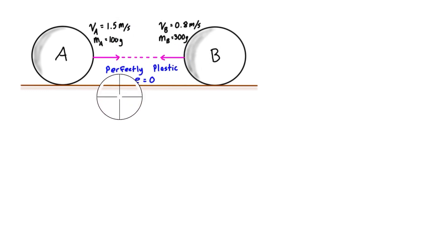This collision is going to be perfectly plastic, so these two objects are going to stick together upon impact and not separate. They're going to have the same common velocity afterwards because they're moving as one. For that to happen, our coefficient of restitution here has to be equal to zero.